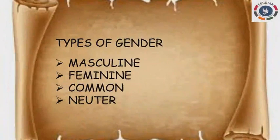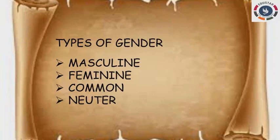Children, I have mentioned the definition for gender — as male, female, or neuter. Gender also has classifications, and they are of 4 types: the 1st one is masculine, 2nd one is feminine, 3rd one is common, and 4th one is neuter. We will see each one by one.